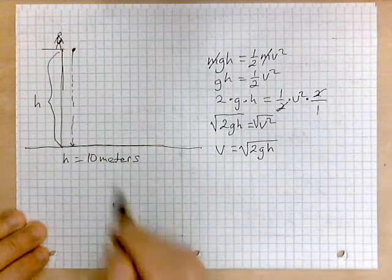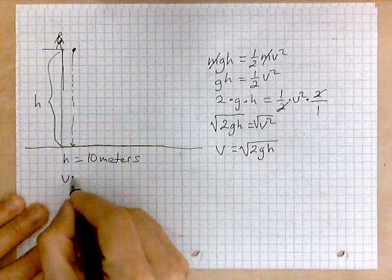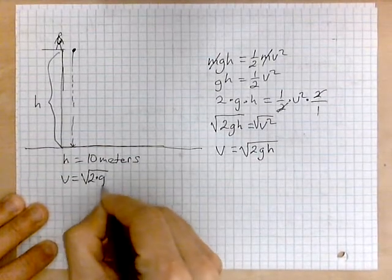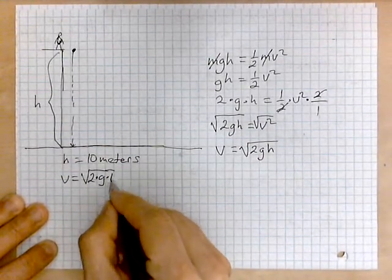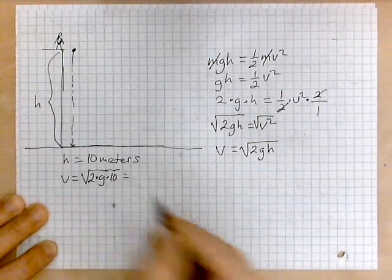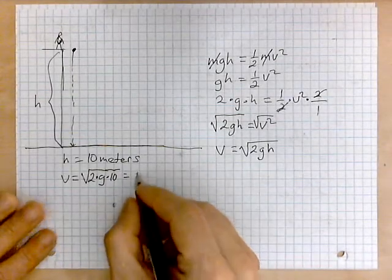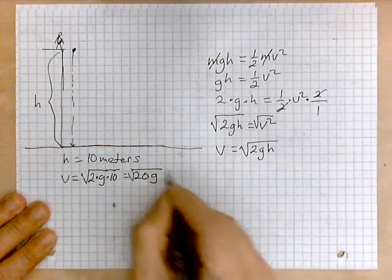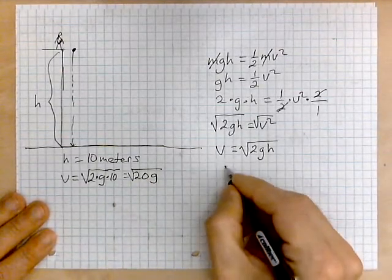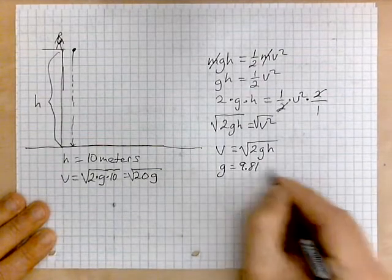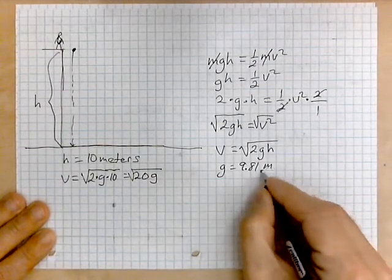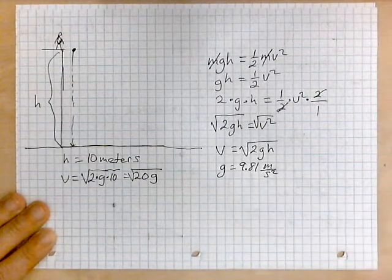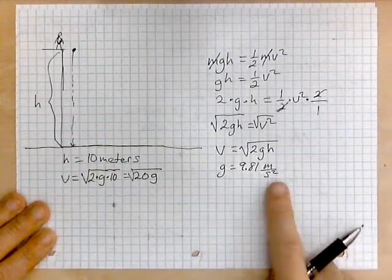then the velocity once the object has been dropped at this point right there when it's striking the surface, that velocity is equal to v equals the root of 2 times G times 10. So this will give 20 G and G in this context is taken as 9.81 meters per second squared as it's commonly pronounced.